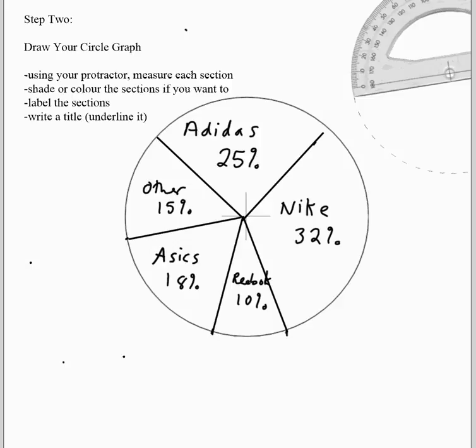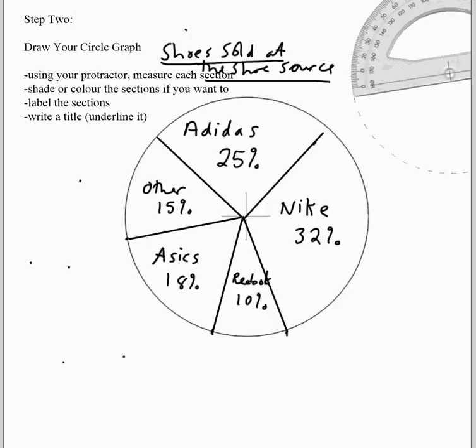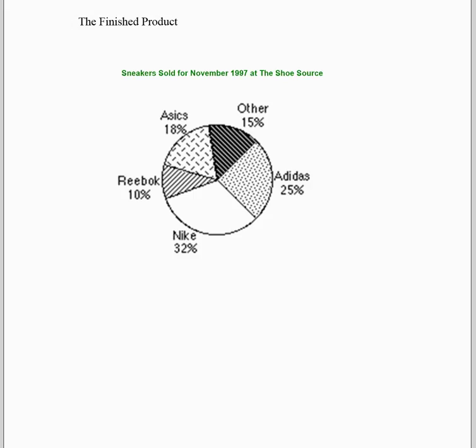The only other thing we need is a title, so we'll title it 'Shoes Sold at the Shoe Source' and always underline your title. If you want to add colors you can, but your graph needs a title and labeled sections with percentages. Make sure you're using a ruler and a protractor. Here's the finished product — there's also another example showing different colors for each section. That's how you make a circle graph.